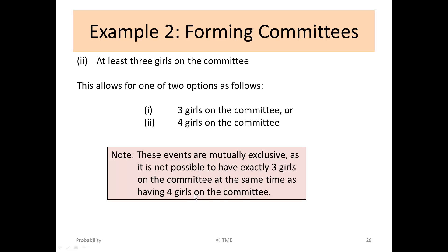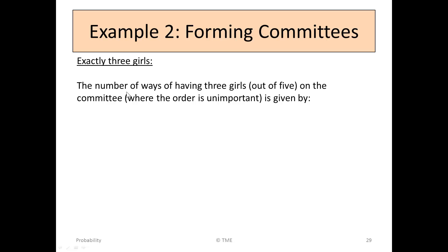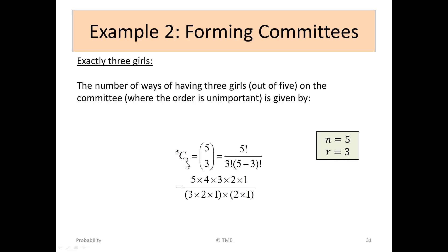Let's look at all the combinations where you might have exactly 3 girls. The number of ways of having exactly 3 girls out of 5, where the order is unimportant, is given by 5C3. 5C3 is 5 factorial over 3 factorial times 2 factorial. The 3 factorials cancel, leaving 5 by 4 over 2 by 1, which is 20 over 2, or 10. So there are 10 ways of selecting exactly 3 girls from the 5.